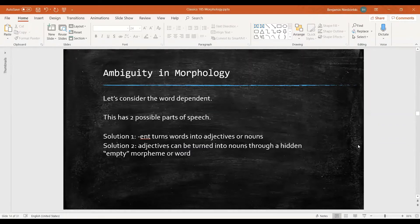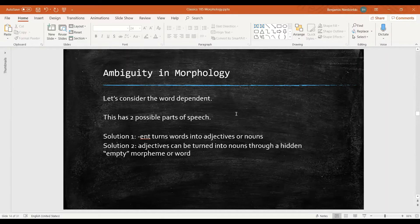Next let's consider the word dependent. This word has two possible parts of speech. It can be an adjective: I am dependent on my friends. Or it can be a noun: having dependents will change your tax situation. There are two possible explanations for this.